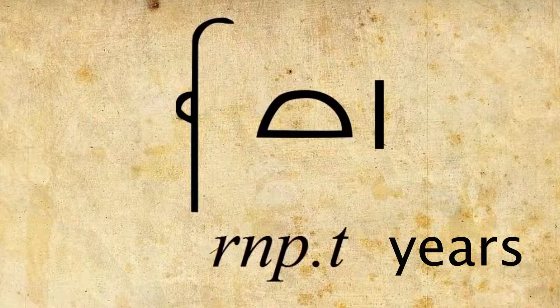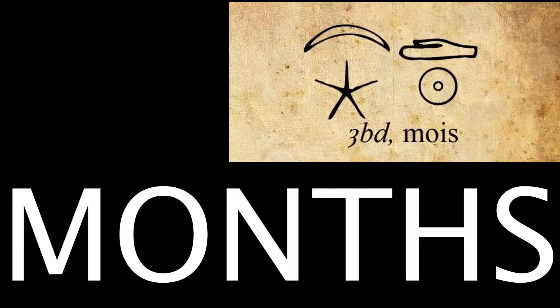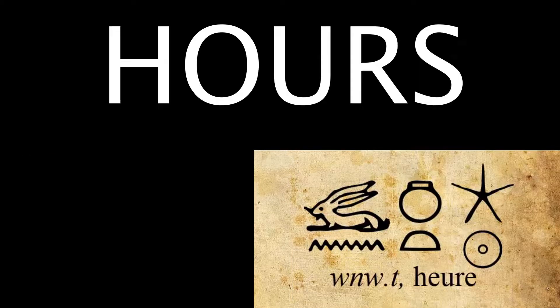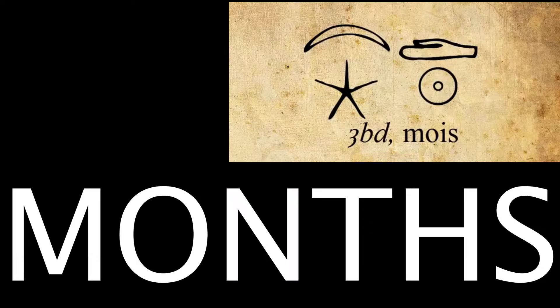Let us now look at the Egyptian calendar. A year is divided into three seasons; each season is divided into four months and each month counts 30 days. A day is divided into 24 hours — 12 hours for the night and 12 hours for the day — and the hours of the night were measured by observing specific stars depending on the time of the year. That explains the presence of the glyph star in the word for hour and in the word for month, as well as a crescent.